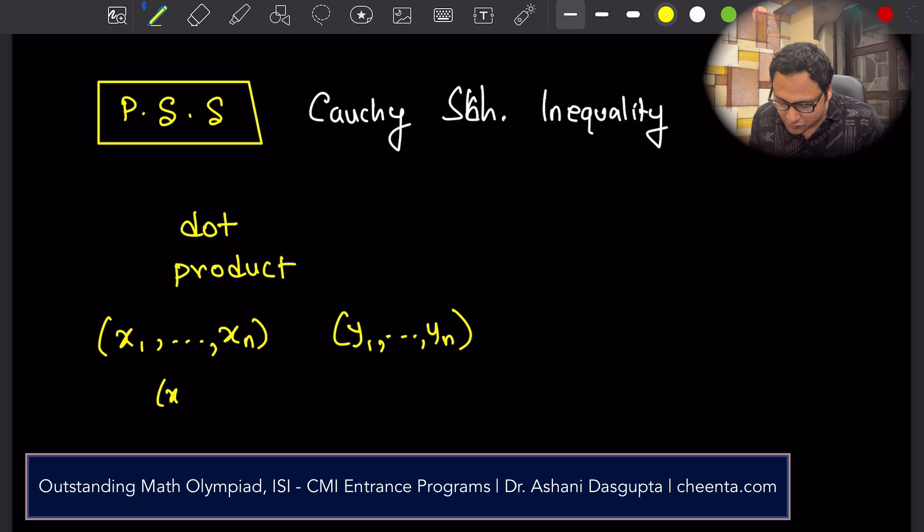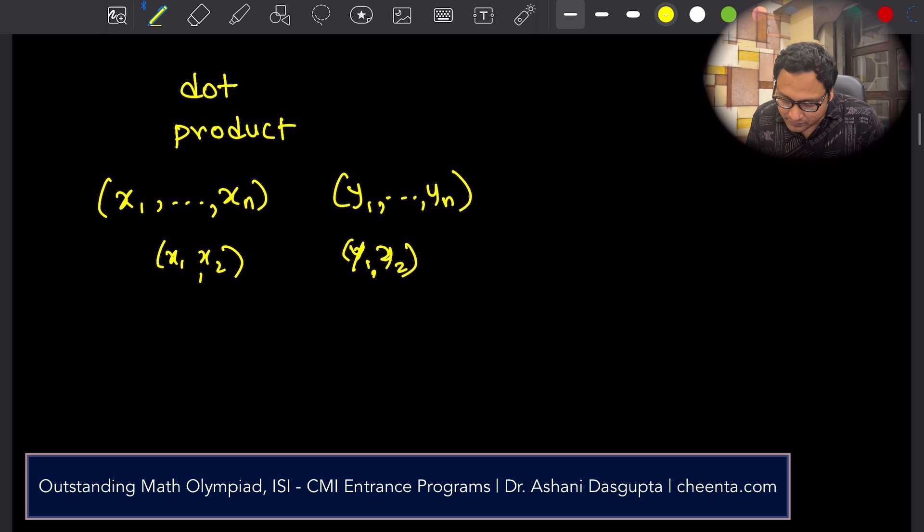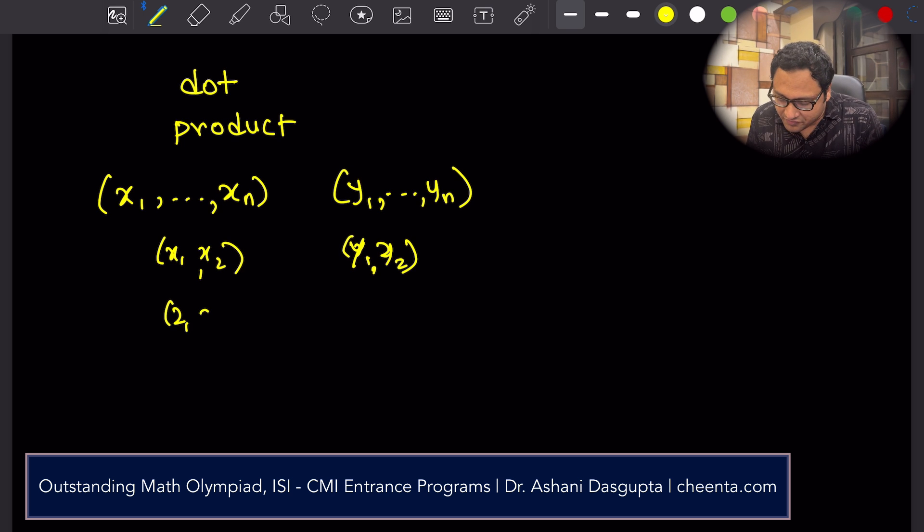If you would like, make it a two-dimensional space: x1, x2, y1, y2. Two different points. If you want your brain to process it even in a more easier way, just 2,3, 5,7. Two points.